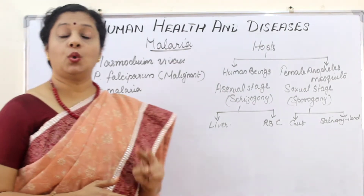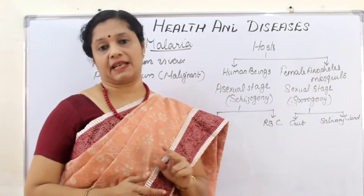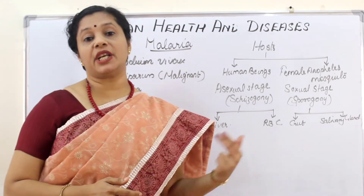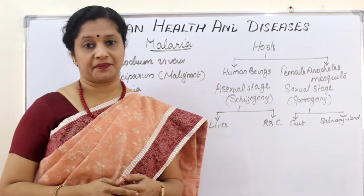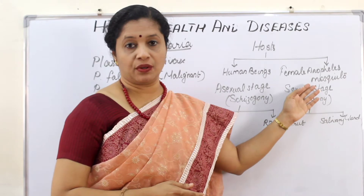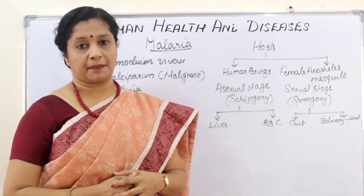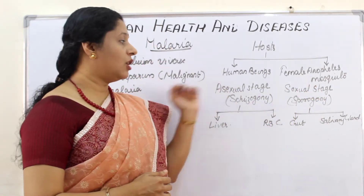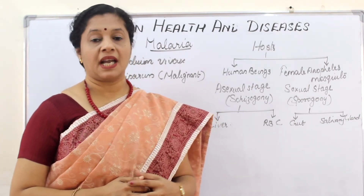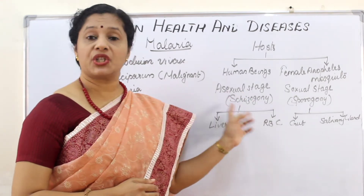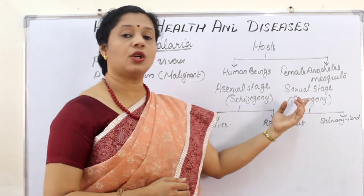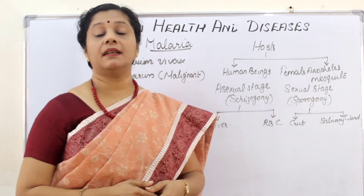Plasmodium needs two hosts to complete its life cycle. It has both sexual and asexual multiplication stages. The primary host is the female Anopheles mosquito, in which the sexual stage occurs. In human beings, the asexual stage happens. The asexual life cycle stage in humans is called schizogony, whereas the sexual stage occurring in the mosquito gut is called sporogony.